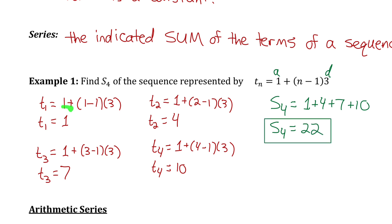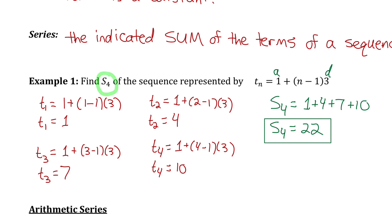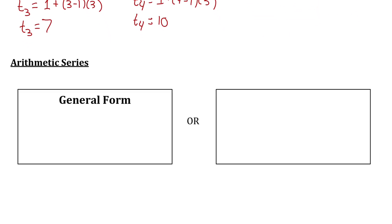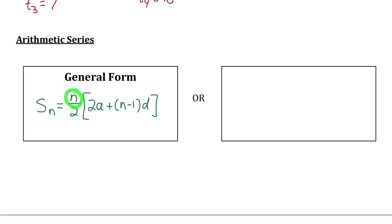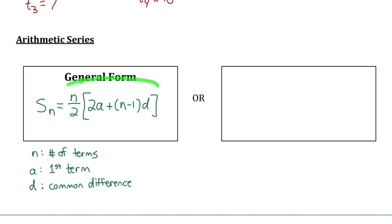If I wanted the sum of, say, the first 20 terms, listing them all out would take a long time. Instead, we can use a formula for calculating the sum of an arithmetic series. To find the sum of n terms of an arithmetic series, we do n divided by 2, multiplied by (2 times a) plus (n minus 1) multiplied by d, where n is the number of terms, a is the first term, and d is the common difference.